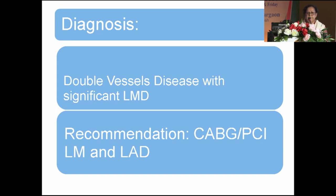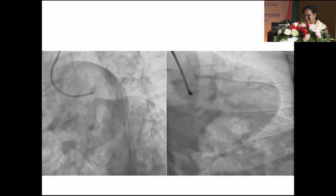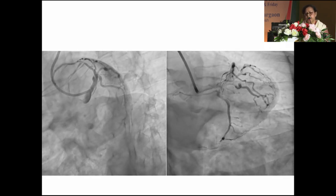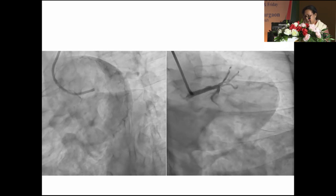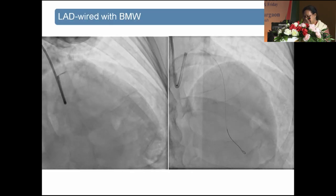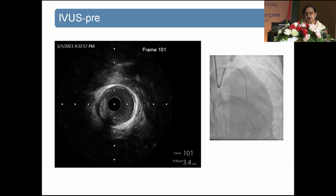The patient refused CABG, so I proceeded with PTCA with IVUS imaging. Our approach was right radial; we took the XB3 guiding catheter, seven French, BMW wire was taken and IVUS was performed. After taking the seven French guiding catheter, I again did the angiogram. Here the left circumflex lesion is very marked with eccentric plaque on the caudal view.